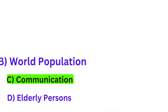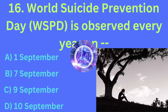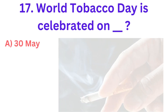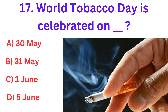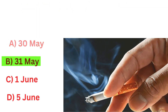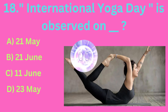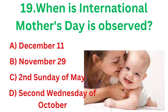World Suicide Prevention Day is observed every year on — the correct answer is option D, 10 September. World Tobacco Day is celebrated on — the correct answer is option B, 31 May. International Yoga Day is observed on — the correct answer is option B, 21 June.